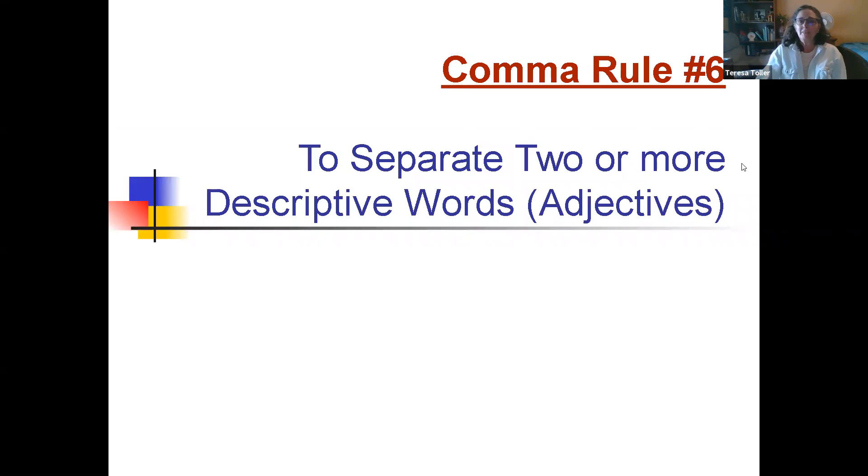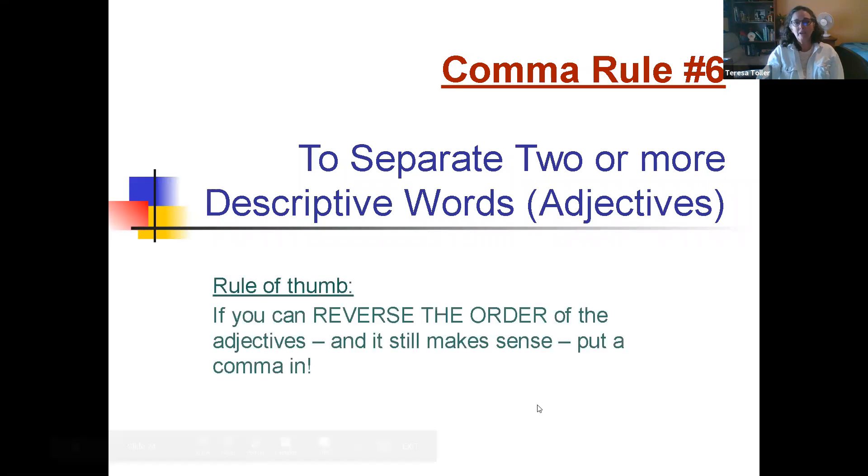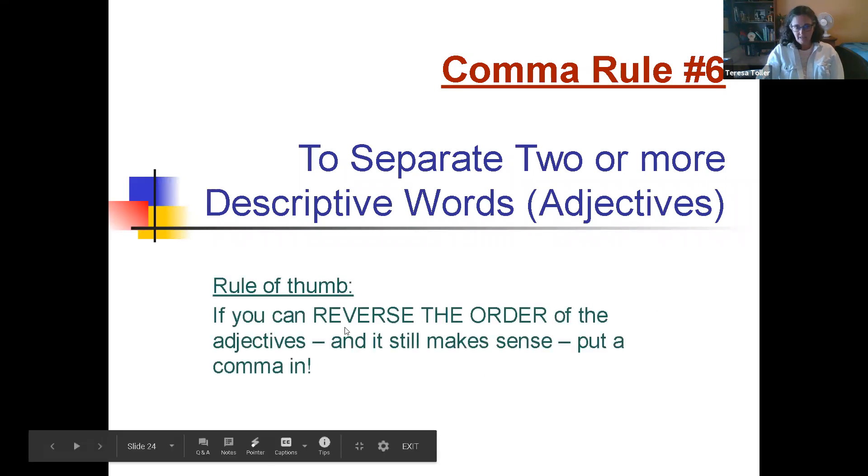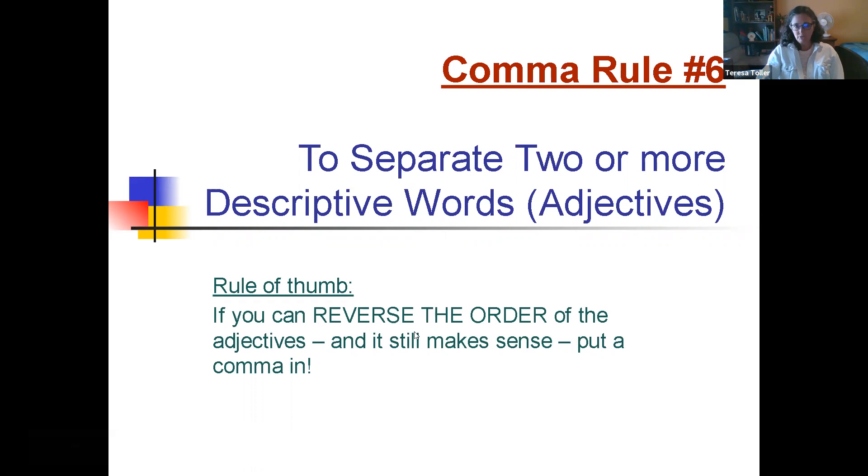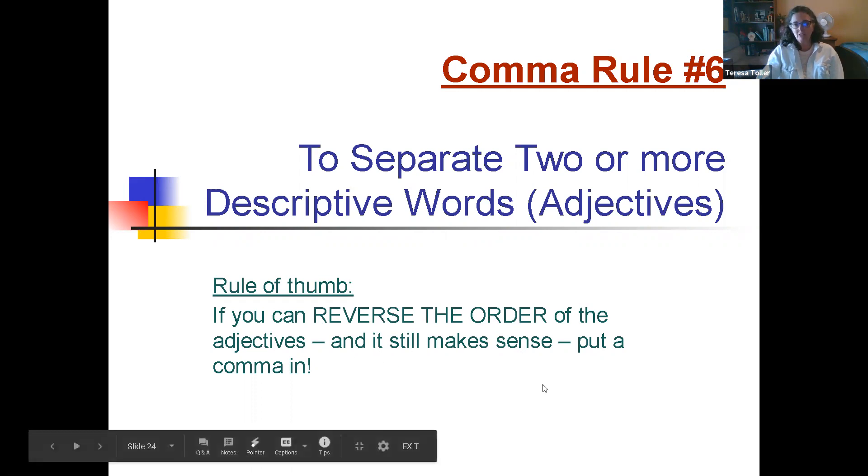Comma rule number six is when you need to separate descriptive words. And again, two or more. The rule of thumb is if you can reverse the order of the descriptive words and it still makes sense, then you should put in a comma. So let's look at some examples.